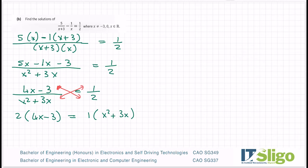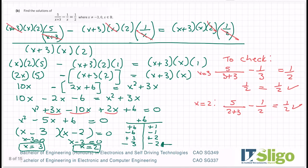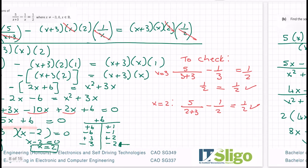So let's work out those brackets. 2 by 4x is 8x. 2 by -3 is -6. And that's equal to x² + 3x. Again, I'm going to bring everything over to the right. So I have x² + 3x - 8x + 6 is equal to 0. Let's tidy up my x terms. I get -5x + 6 is equal to 0.